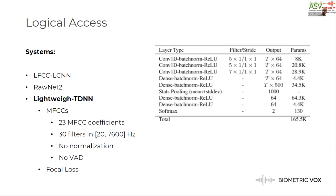For the logical access task, we work with three systems. The first two are the two deep learning baselines from the organizers. The third one is a lightweight TDNN architecture, similar to the ones I just presented, but with a much smaller number of parameters. It uses MFCC coefficients as input and was also trained using focal loss instead of cross-entropy.